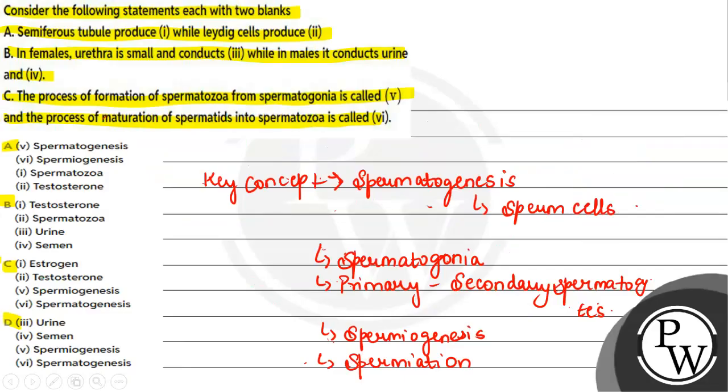Therefore, the correct answer for this given question is option number A, which mentions fifth spermatogenesis, six spermiogenesis, first spermatozoa, and second testosterone. Hope you understood it well. Best of luck.